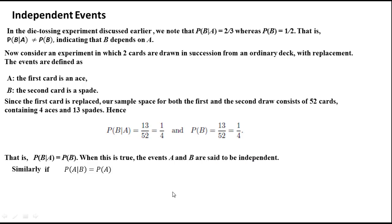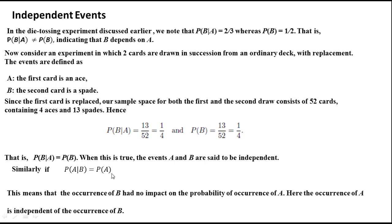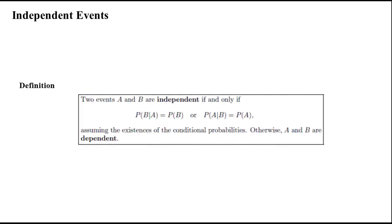Similarly, if P(A|B) = P(A), this means the occurrence of B has no impact on the probability of A, so the occurrence of A is independent of B. Two events A and B are said to be independent if and only if P(B|A) = P(B) or P(A|B) = P(A), assuming the conditional probabilities exist. Otherwise, A and B are dependent.